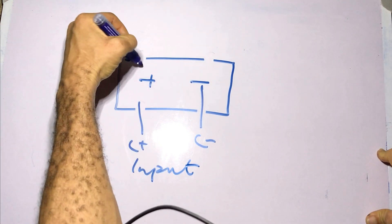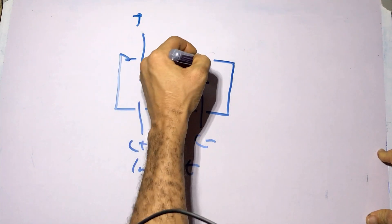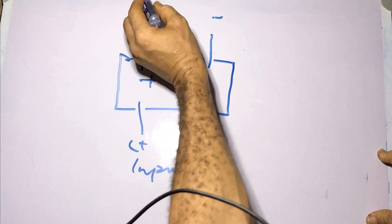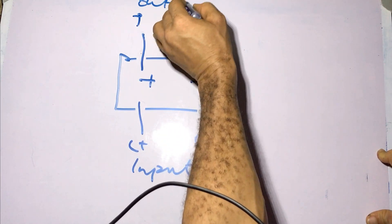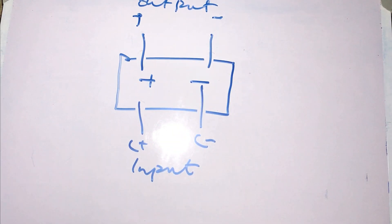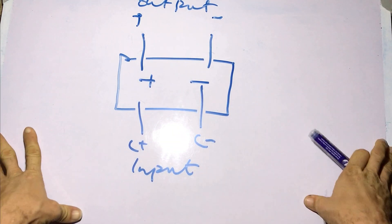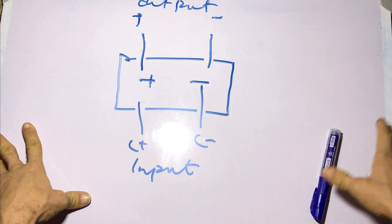Then we have our P plus here, P minus here. Then we have our output or discharge. So this is basically how you wire a 4S BMS to a 16.8 volts lithium ion battery.